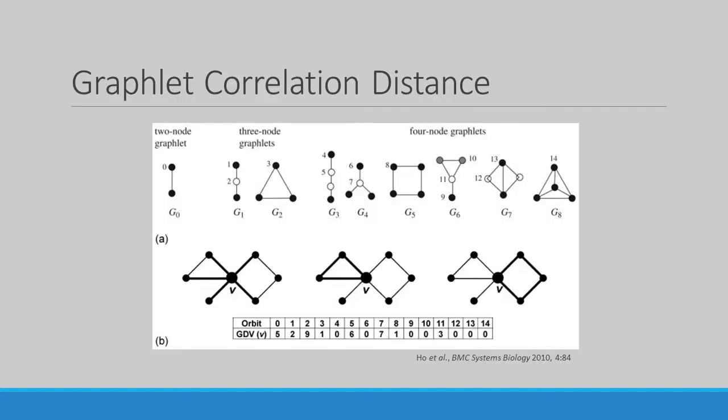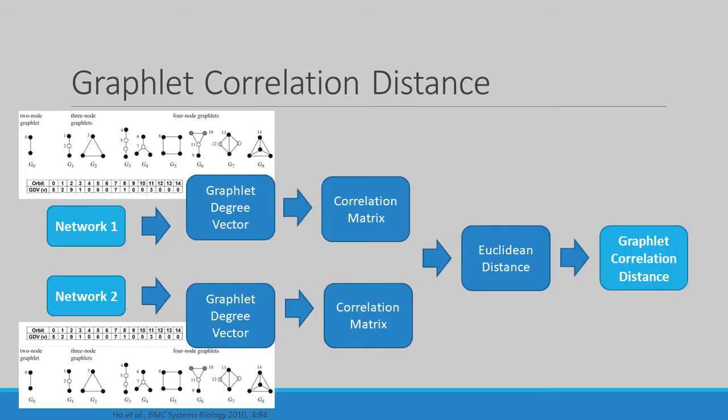Static graphlet correlation distance uses graphlets, or small subgraphs, to examine and quantify the overall structure of the networks. We can then use this to quantify the similarity between the networks.